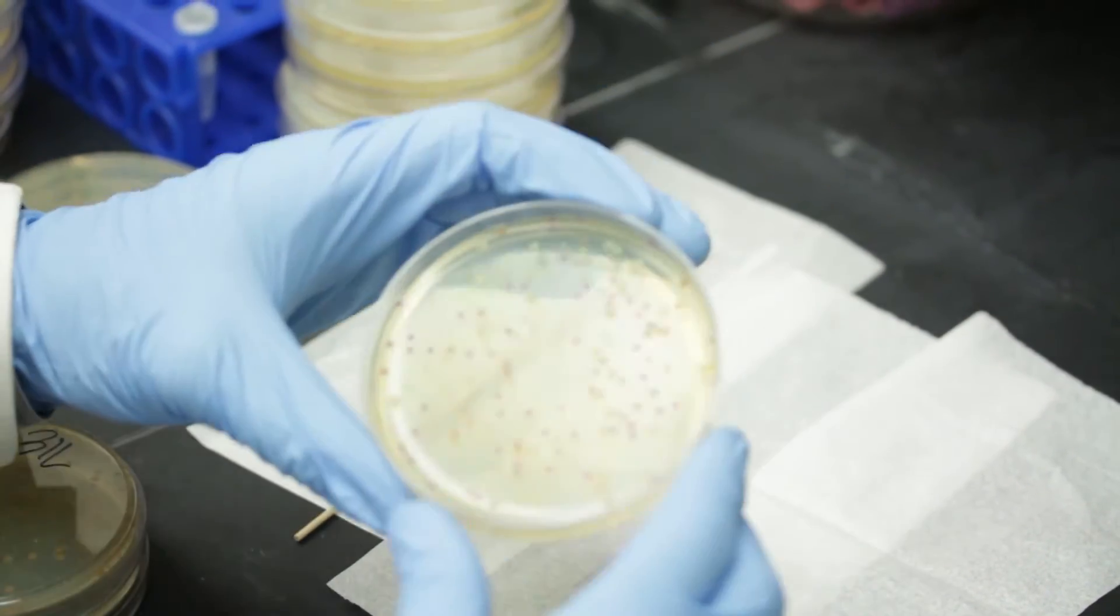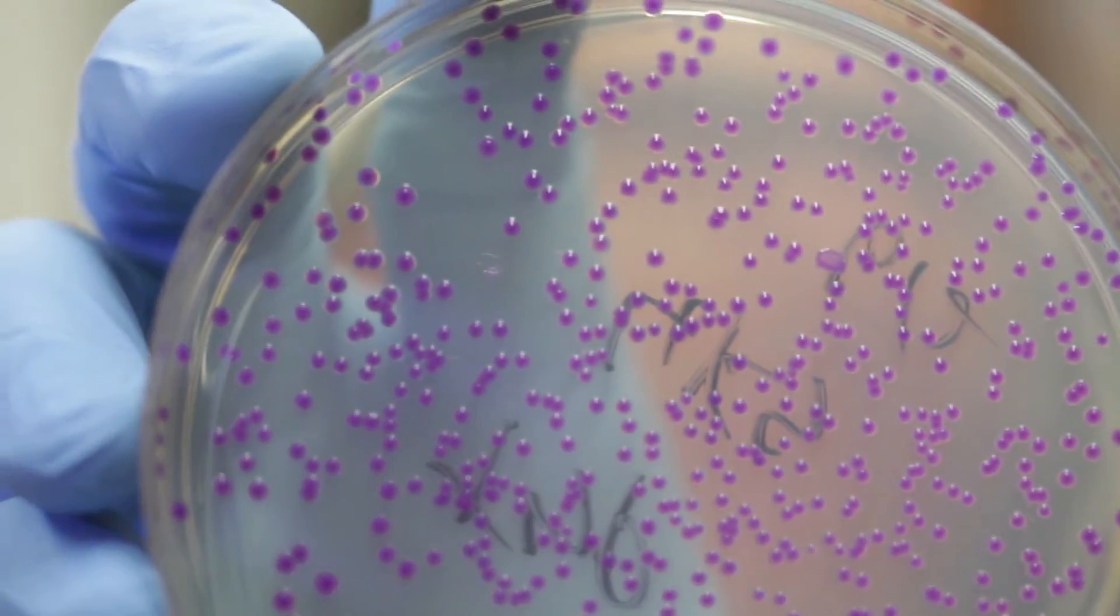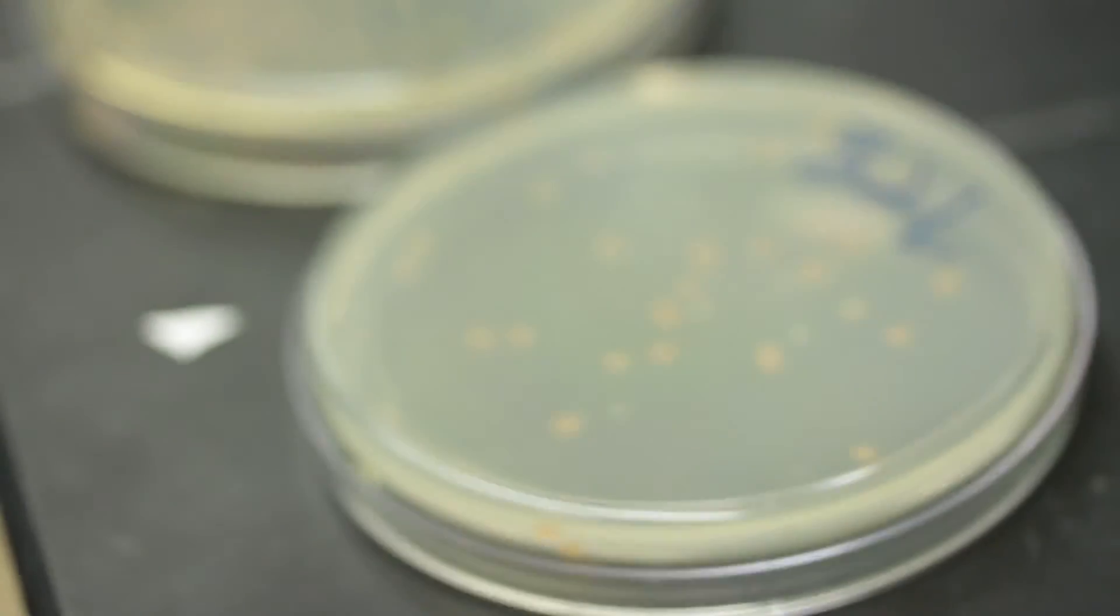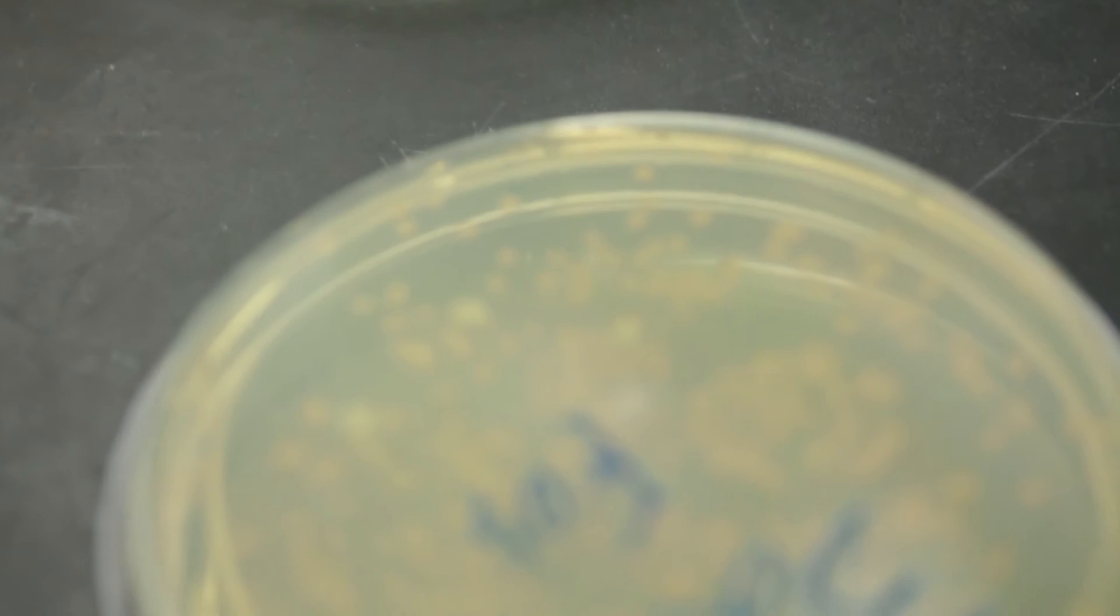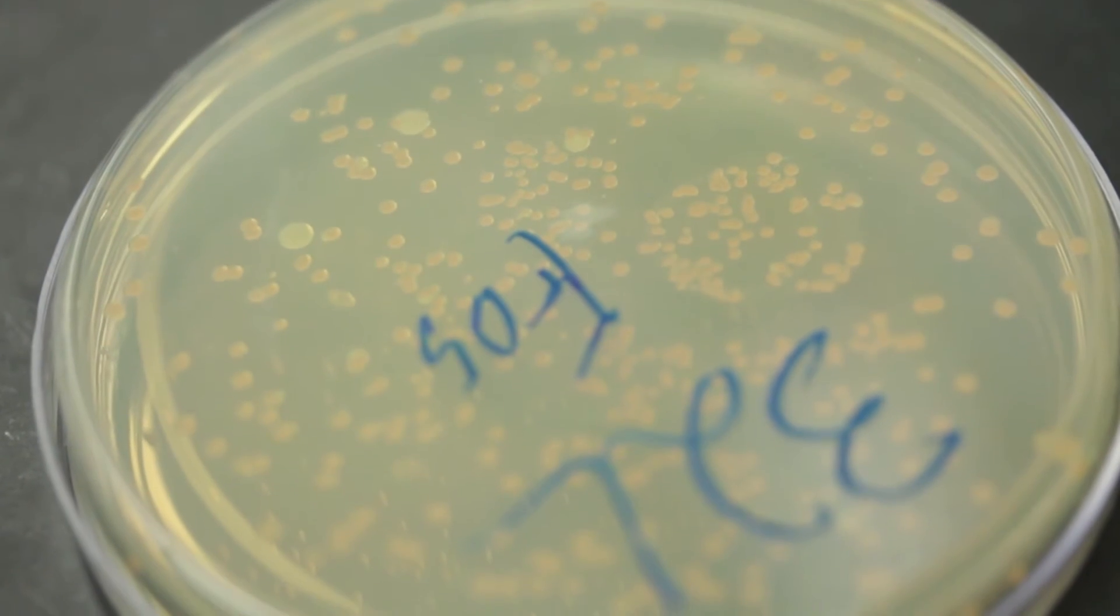The part that we've developed and really engineered is being able to have these cells produce some output that you can read without any equipment. What we did was have them produce three different types of pigment so that it turns a specific color based on what the specific nutrient level is. That way it's almost like a bacterial litmus test.